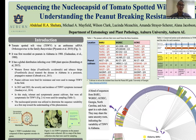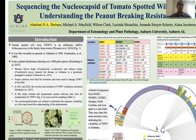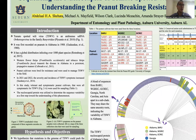The virus is an ambisense single-stranded orthotospovirus that belongs to the Bunyaviridae family. I'd like to mention that Bunyaviridae has viruses that infect both humans, animals, and plants, so sometimes plant viruses act like animal viruses — that's why I like working on these viruses. The virus was first recorded on peanut in Alabama in the 1980s.